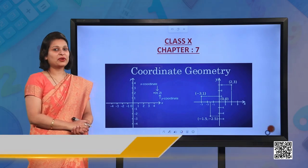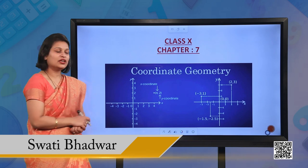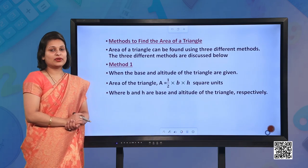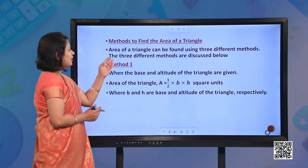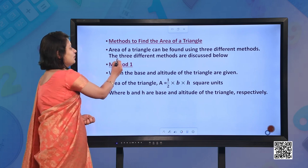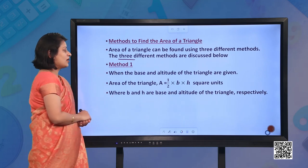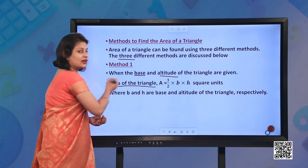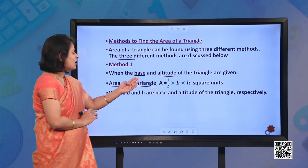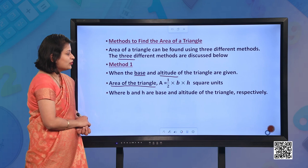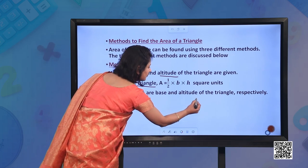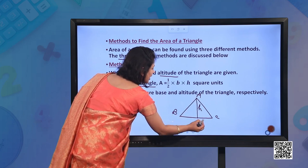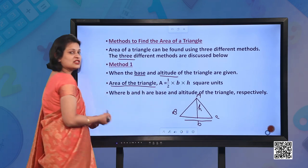Hello students, today we are going to discuss the last topic of Chapter 7 Coordinate Geometry: Area of Triangle. There are basically three methods from which we can calculate the area of a triangle. Method one: when the base and altitude of a triangle are given, we can calculate the area as half into base into height, where b and h are the base and altitude of the triangle respectively.